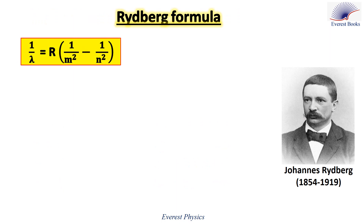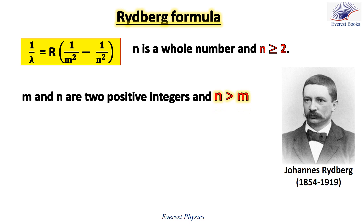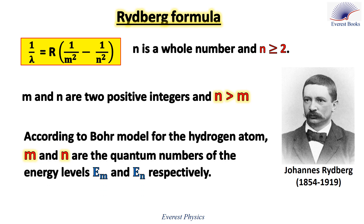In 1888, Rydberg generalized the Balmer equation for all the emission lines of the hydrogen atom. The relation is among the wavelength of the emitted photon lambda, the Rydberg constant R, and two positive integers M and N, where N is greater than M and M is greater than or equal to 1. According to the Bohr model for the hydrogen atom, M and N are the quantum numbers of the energy levels E_M and E_N respectively.